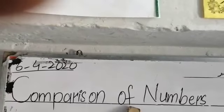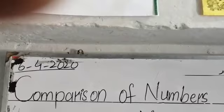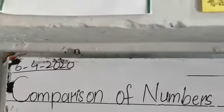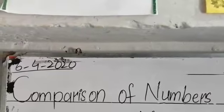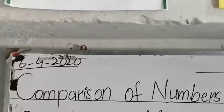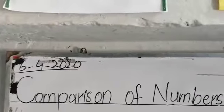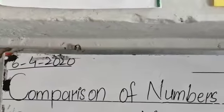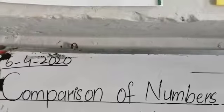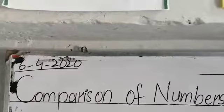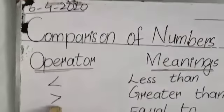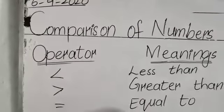Our next topic is comparison of numbers. In math, to compare means to check the difference between numbers, quantities, or values to decide if one is greater than, smaller than, or equal to another. By comparing, we find by how much a number is greater or smaller. For example, we can compare heights — standing next to someone, we can tell if our height is smaller, bigger, or equal. The three symbols are: less than, greater than, and equal to.